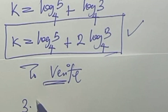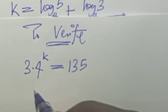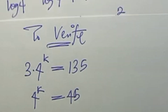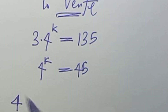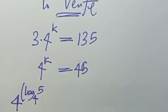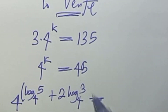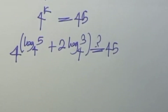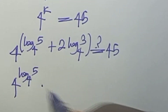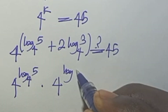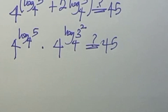To verify: from the original equation we had 3 times 4 to the power of k equals 135, and we found 4 to the power of k equals 45. Substituting the value of k, we get 4 to the power of log 5 base 4 plus 2 log 3 base 4, which can be written as 4 to the power of log 5 base 4 times 4 to the power of log 3 squared base 4.